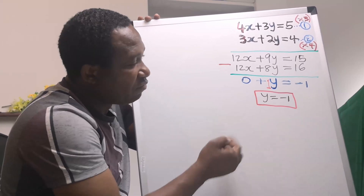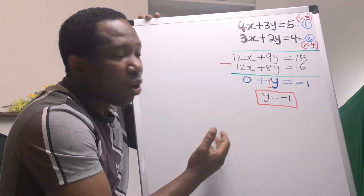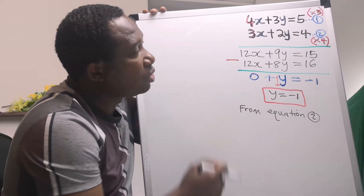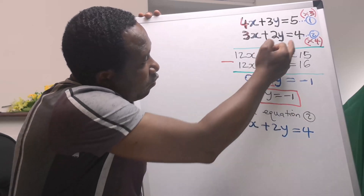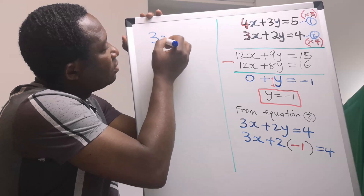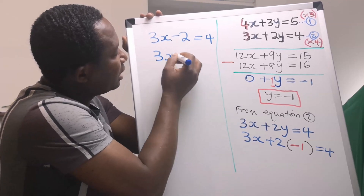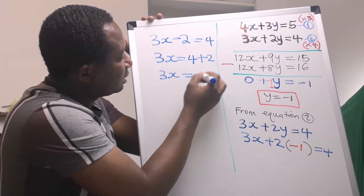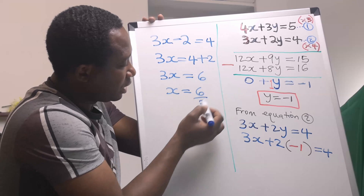Now that we have obtained the value for y, we are going to substitute into either equation 1 or equation 2. I have decided to use equation 2. If you use equation 1, you will still get the same answer. From equation 2, 3x plus 2y is 4. But y equals minus 1, so we have 3x plus 2 times minus 1, which gives minus 2. And we have 4. So 3x is 4 plus 2, which is 6. And x is 6 over 3, so x equals 2.